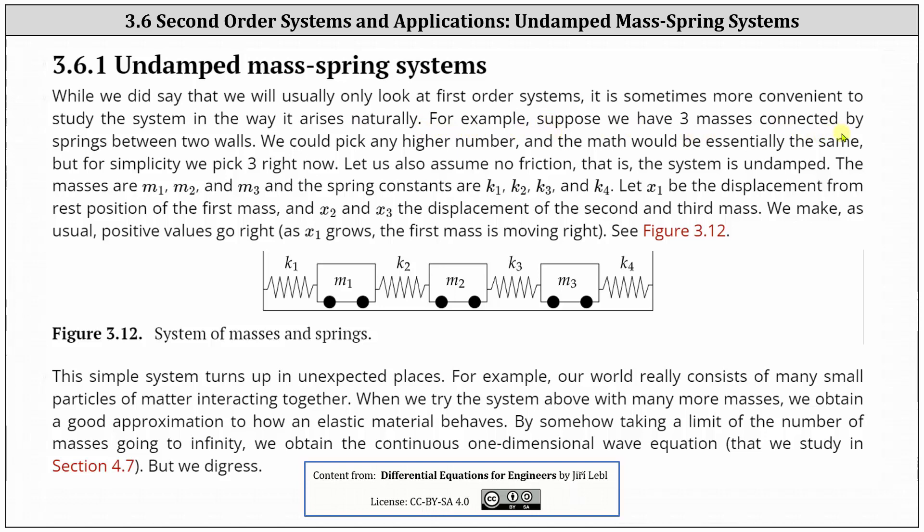For example, suppose we have three masses connected by springs between two walls as pictured below. We could pick any higher number and the math would be essentially the same, but for simplicity, we pick three right now.